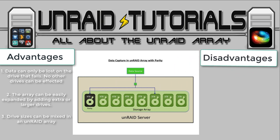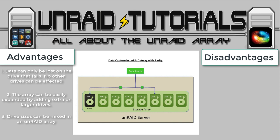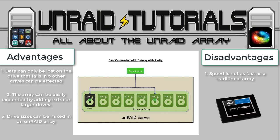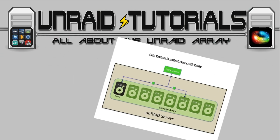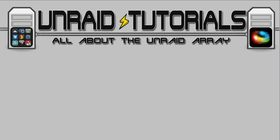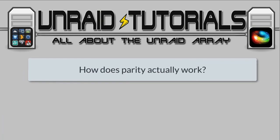The disadvantage to not striping is we do lose speed in our array compared to a traditional array. But Unraid combats this with the use of a cache drive, which we'll discuss later. Also, even if the parity drive fails, that drive can be replaced and parity recalculated. So that brings us on nicely to explain how parity works.